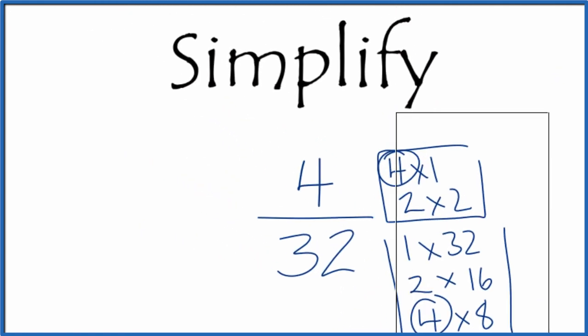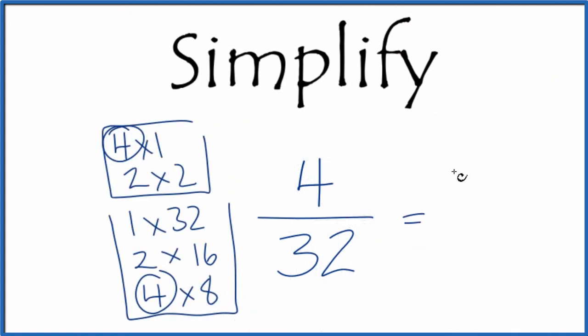Let's move these out of our way. 4 divided by 4 is 1, and then 32 divided by 4, that's 8. We get the same answer.